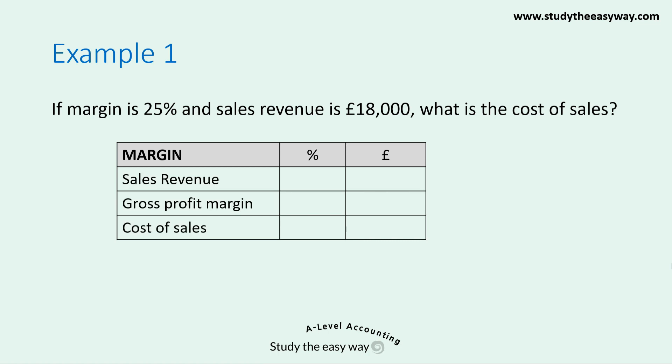Because it's margin, we start off with sales revenue and take away the gross profit margin to give us cost of sales. In percentage terms, using the 25% given in this question, sales revenue is our start point of 100. The gross profit margin is 25, meaning cost of sales is 100 minus 25, which equals 75. We then write in the other piece of information: sales revenue of £18,000. The question is how much is the cost of sales figure?